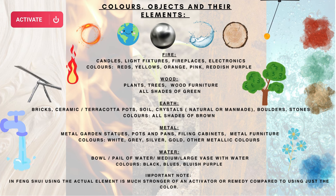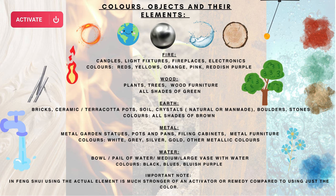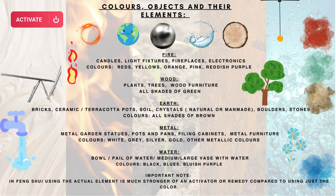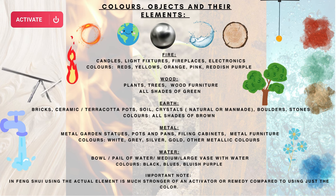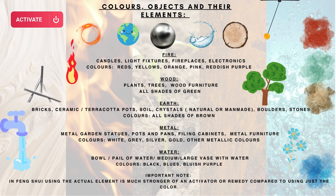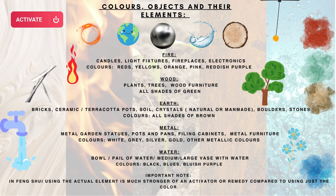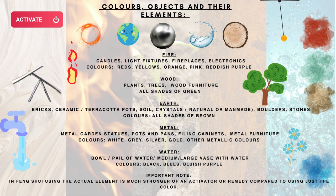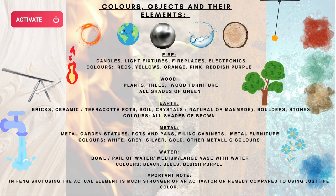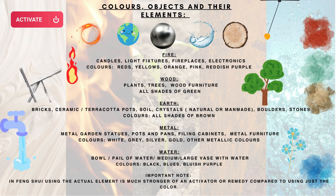Moving on to wood: the wood elements relate to plants, trees, and any wood furniture you may have, and the color relating to wood would be all shades of green. Moving on to the earth element, it relates to objects such as ceramics, bricks, terracotta pots, any crystals — so any of those crystal collectors out there — boulders, and stones. The colors related to earth are all shades of brown.